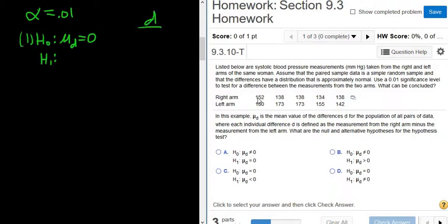So if you subtract these numbers, if I do 152 minus 180, if I type in 152 minus 180 into my calculator, I get negative 28. That's a d, d for difference. If I do 138 minus 173, I get negative 35. So if I were to subtract each of these pairs, I would get a number. These numbers are called the d's. So this is a sample, this right arm and left arm. This is a sample. Therefore, the d's are also a sample.